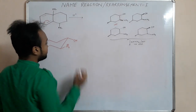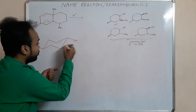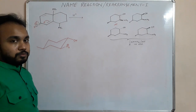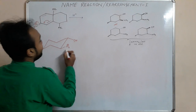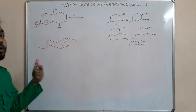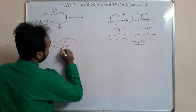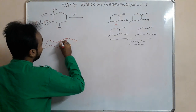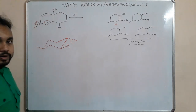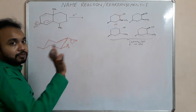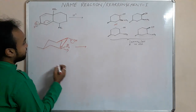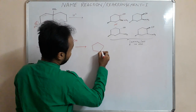Rearrangement takes place and the bond which is anti-periplanar to N2+ migrates. N2 is a good leaving group because it forms stable N2 gas when it leaves. To expel N2, the anti-periplanar bond must migrate. The anti-periplanar CC bond migrates, the oxygen lone pair forms a double bond, and N2 leaves. We get a 5-membered ring.